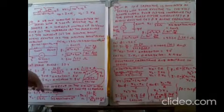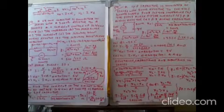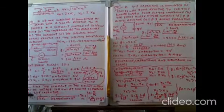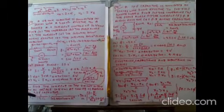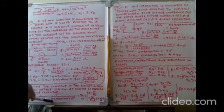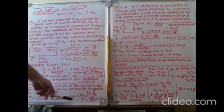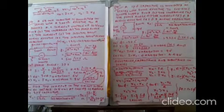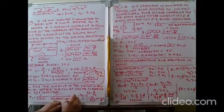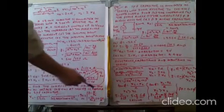Another problem: find the current when an AC voltage of 10 V RMS at 1000 Hz is applied to a 2 µF capacitor. Capacitive reactance XC = 1 / (2π × f × C) = 1 / (2π × 1000 × 2 × 10⁻⁶) = 79.5 Ω. Current I = V / XC = 10 / 79.5 = 125.7 mA. This is the current drawn by the capacitor.